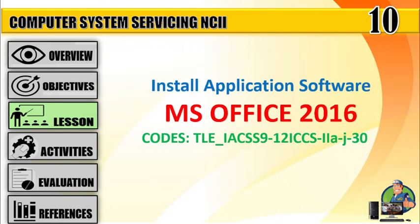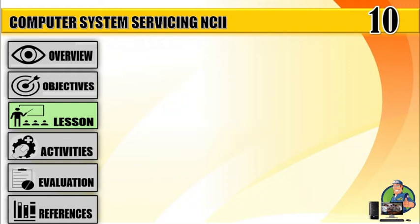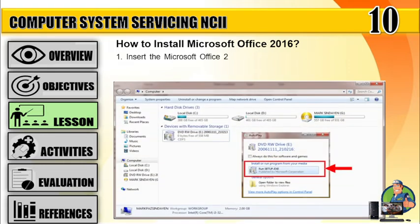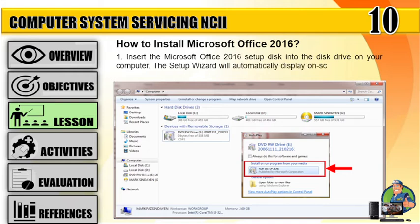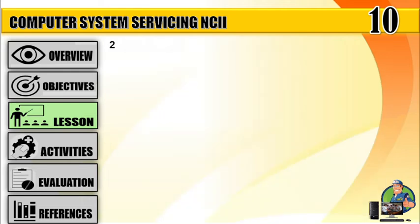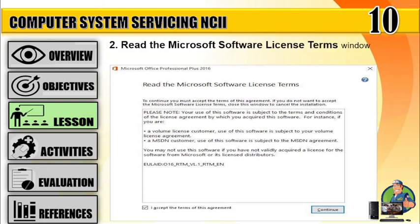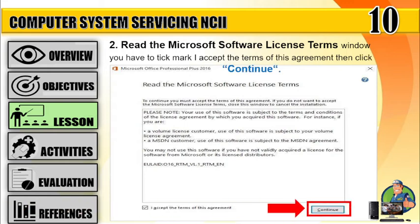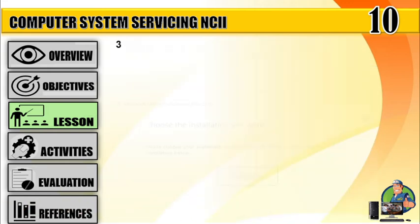Install application software using Microsoft Office 2016. How to install Microsoft Office 2016 — follow the step-by-step guide. Number one, insert the Microsoft Office 2016 setup disk into the disk drive on your computer. The setup wizard will automatically display on screen after a few moments. Number two, read the Microsoft software license terms window. You will have to tick mark 'I accept the terms of this agreement,' then click Continue.